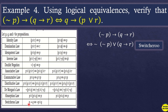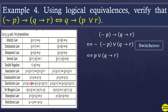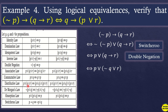Starting with ¬p, we apply Double Negation, giving us p. Then applying the Switcheroo Law to the conditional, the 'if...then' becomes an 'or', so we get 'p or q' combined with 'if q then r'.